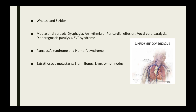Spread to mediastinal structures like the esophagus can cause dysphagia. Invasion of the pericardium can lead to arrhythmia and pericardial effusion. Left-sided tumors, when they involve the left recurrent laryngeal nerve, can cause vocal cord paralysis, and the patient presents with bovine cough. Invasion of the phrenic nerve leads to diaphragmatic paralysis. The tumor can also compress the superior vena cava, leading to superior vena cava syndrome, where the patient presents with distension of veins on the chest and neck, suffusion and swelling of the face and eyes, and headache. Extra-thoracic metastasis can happen to the brain, bones, liver, and lymph nodes.